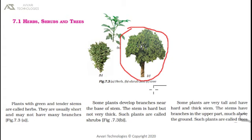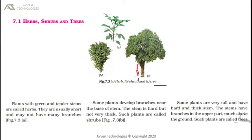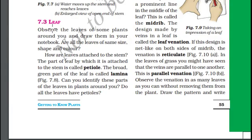Some plants are very tall and have a hard and thick stem. You can notice that this plant has a hard and very thick stem. The stems have branches in the upper part — we don't see many branches in the lower part of a tree. Generally we will see branches at the upper part. Such plants are called trees.